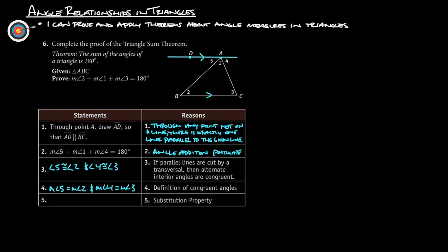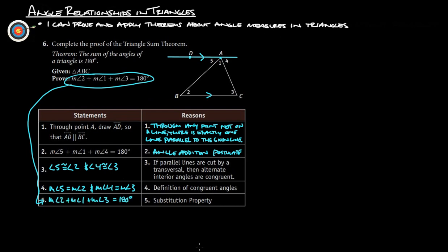By the substitution property, we take measure of angle 5 out and put measure of angle 2 in, and take measure of angle 4 out and put measure of angle 3 in. That gives us measure of angle 2 plus measure of angle 1 plus measure of angle 3 equals 180 degrees — which is exactly what we needed to prove.